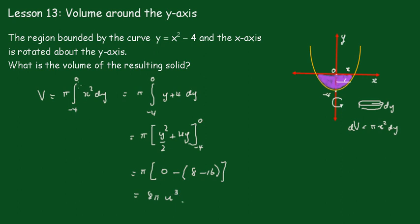If you'd made the mistake and went from minus 4 to 0, this would have become a negative result. So just be very careful when you're setting up the integral with these limits. Notice that we actually went from minus 4 up that way, moving that positive direction up.